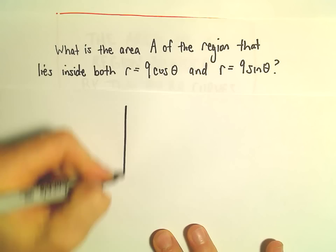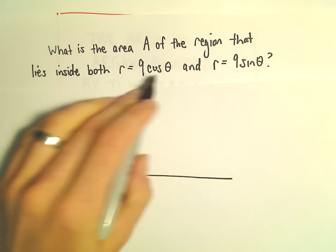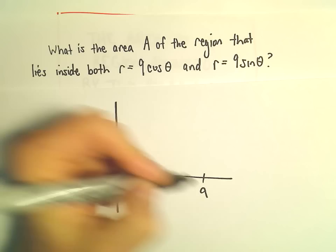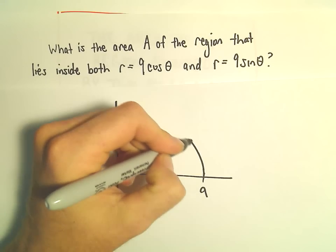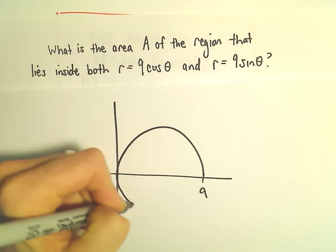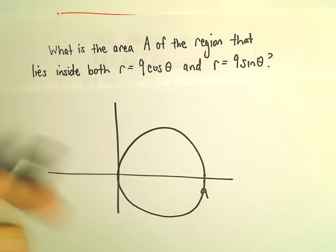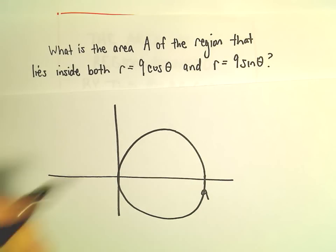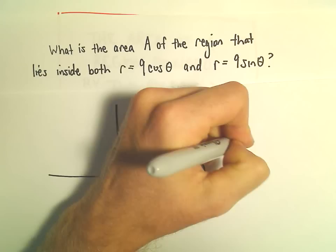So I'm going to do a quick sketch of these. r equals 9 cosine theta is going to be a circle that sits on the positive x-axis, so that's going to be 9 cosine theta.